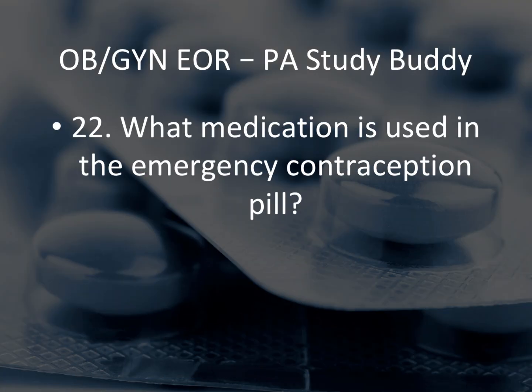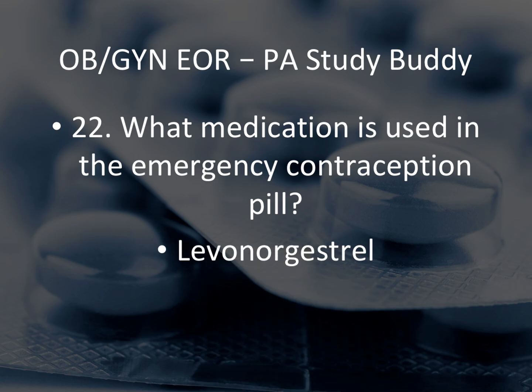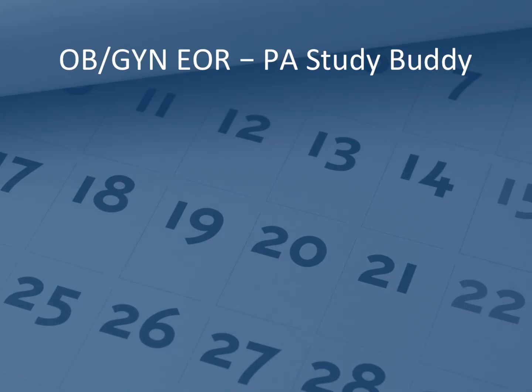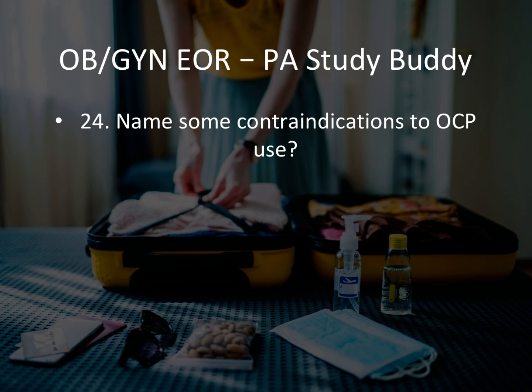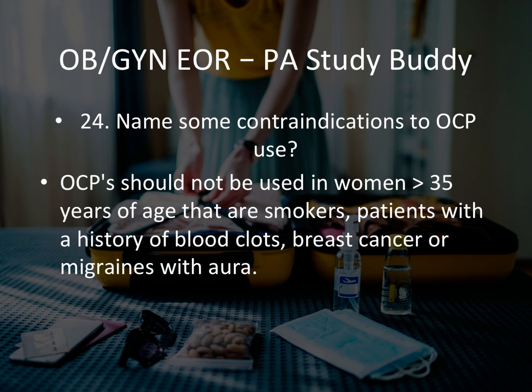Question 22: What medication is used in the emergency contraception pill? They'll give you a stem with different medications and for the emergency contraception pill it's levonorgestrel. Question 23: When is the luteal phase of the menstrual cycle? They'll give you different time frames — it's days 15 to 28.